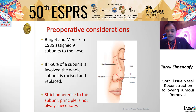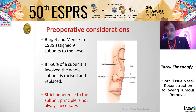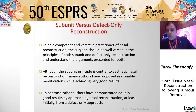The nose is divided into nine subunits: the dorsal, the side wall, the tip, the soft triangle, the alar, the nostril sill and the columella. If more than 50% of a subunit is involved by the defect, the whole subunit is excised and replaced. Strict adherence to the subunit principle is not always necessary, and there is ongoing debate between subunit excision versus defect-only reconstruction.